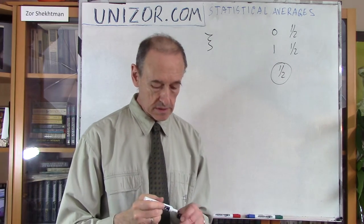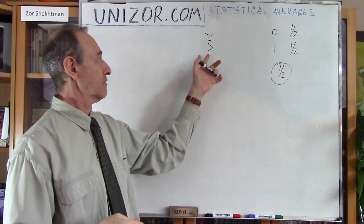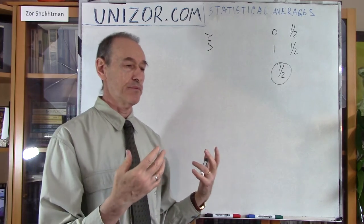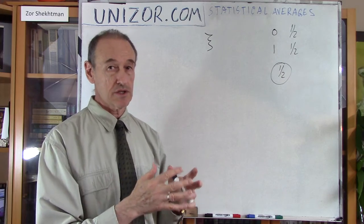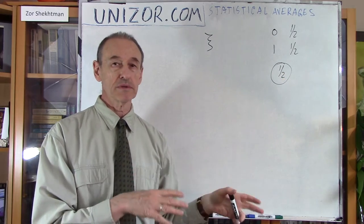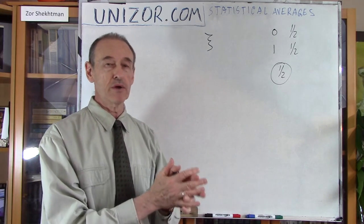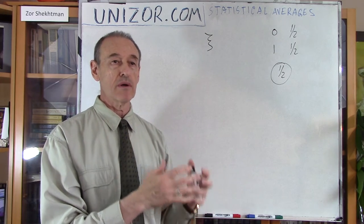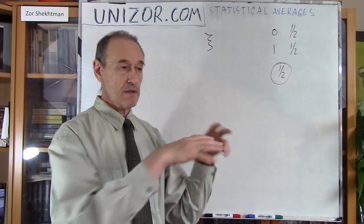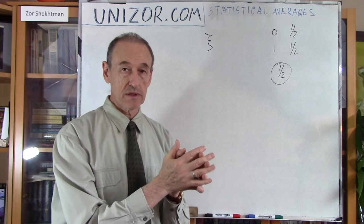But this Bernoulli random variable will never take the value of 1/2. So it's not always correct to say that the values of a random variable are concentrated around its mean value, and the variance describes how tightly it is concentrated around the mean. In more often occurring cases in real statistics, there is some mean value and the values of the random variable are concentrated around it. If the variance is very big, values are spread wider; if the variance is very small, the values are concentrated closer to the mean.